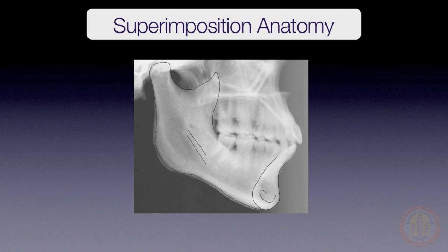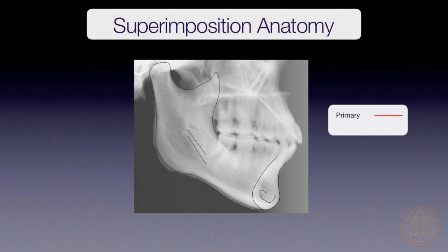In order to accurately superimpose the mandible, you need to rely upon structures that do not change over time. There are both primary and secondary stable structures used for superimposition. The primary structures are the most important and should be used whenever they can be visualized; secondary structures are used to support the primary ones or when primary structures cannot be clearly seen. Perhaps the most reliable primary structure is the contour of the chin just below Pogonion — it can always be seen.